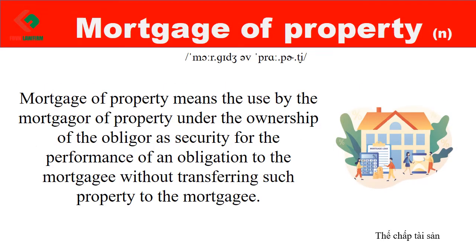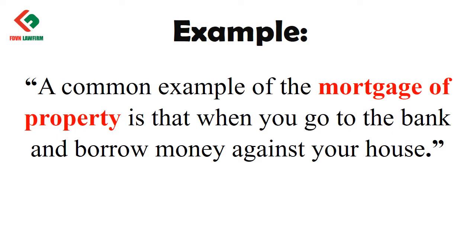Mortgage of property means the use by the mortgager of property under the ownership of the obligor as security for the performance of an obligation to the mortgagee, without transferring such property to the mortgagee. A common example is when you go to the bank and borrow money against your house.